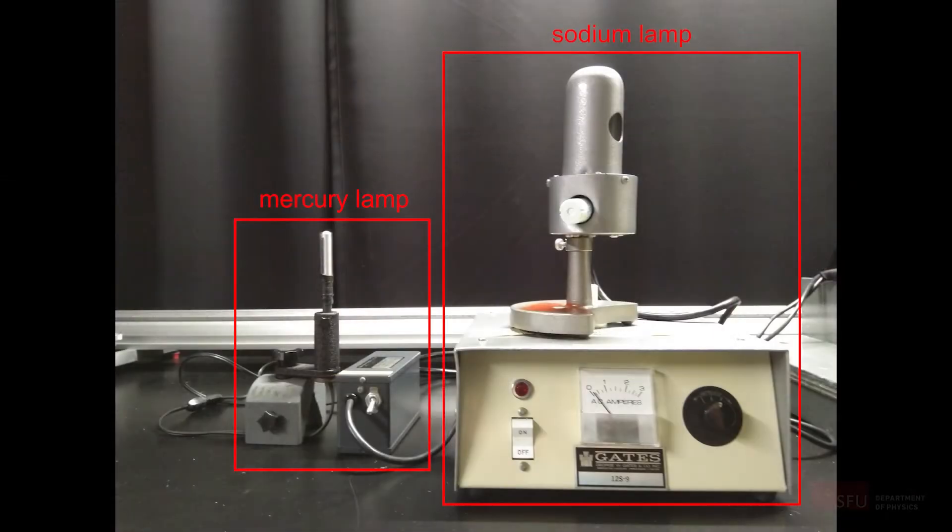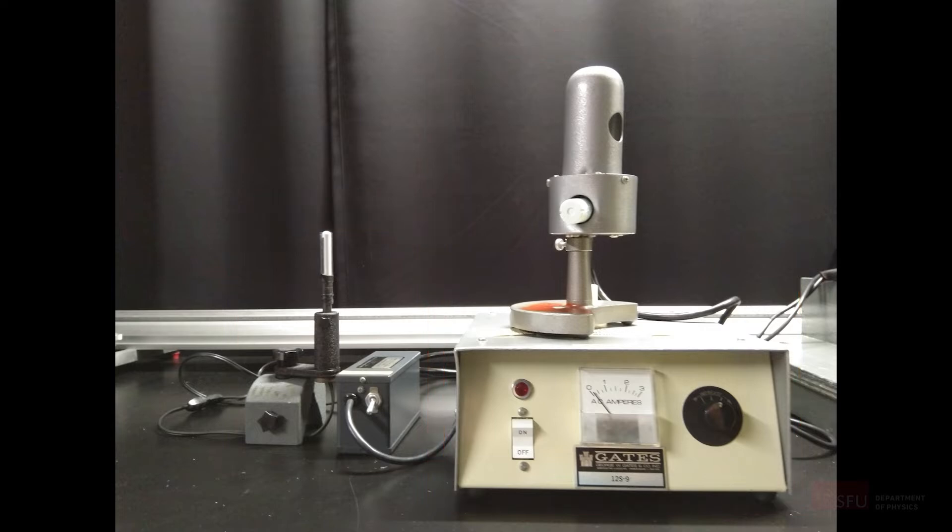The mercury and sodium lamps at your disposal are straightforward to use. Both have simple on-off switches. You will need to let them warm up for a few minutes before using them. The sodium lamp has an additional control for light intensity. The middle intensity setting should be sufficient.